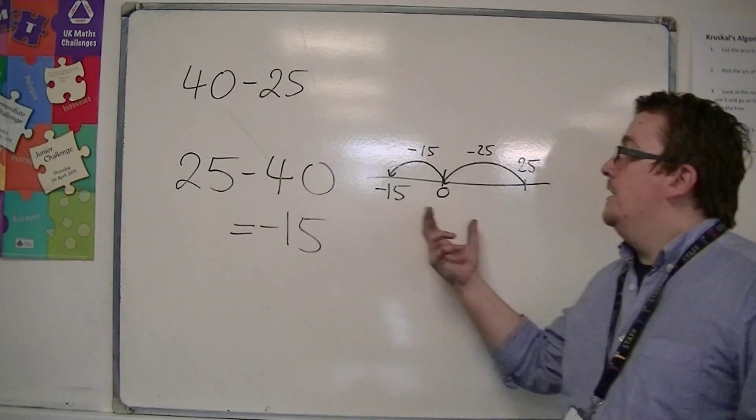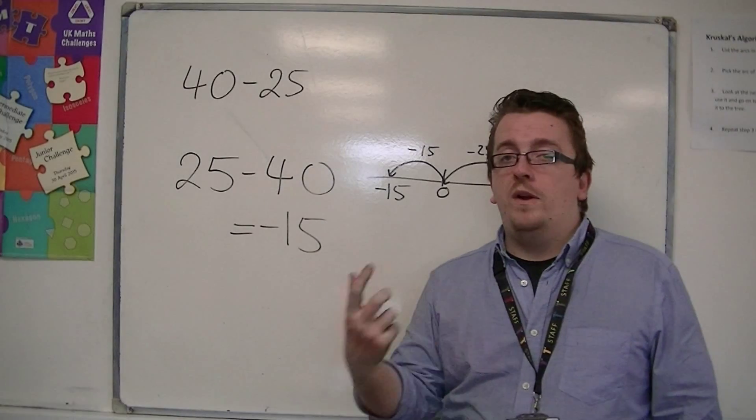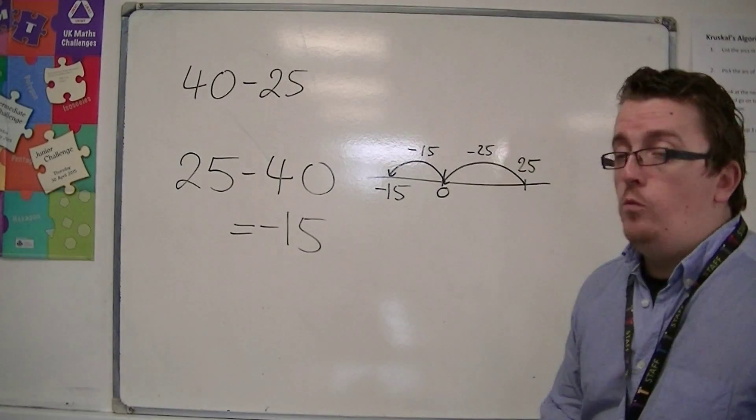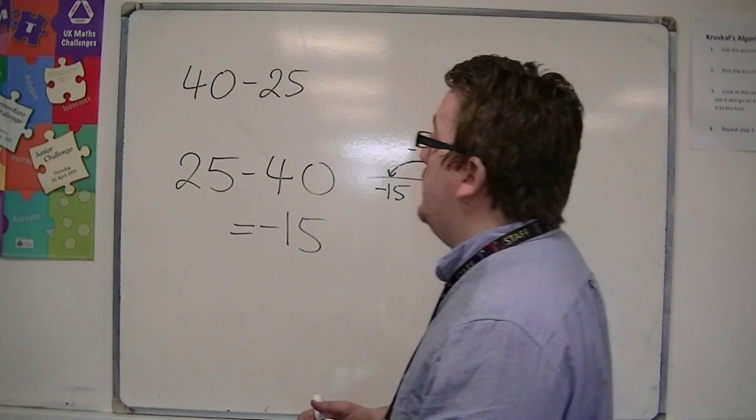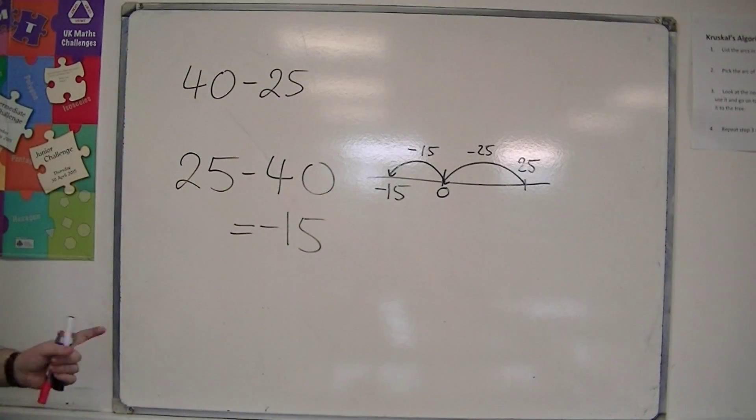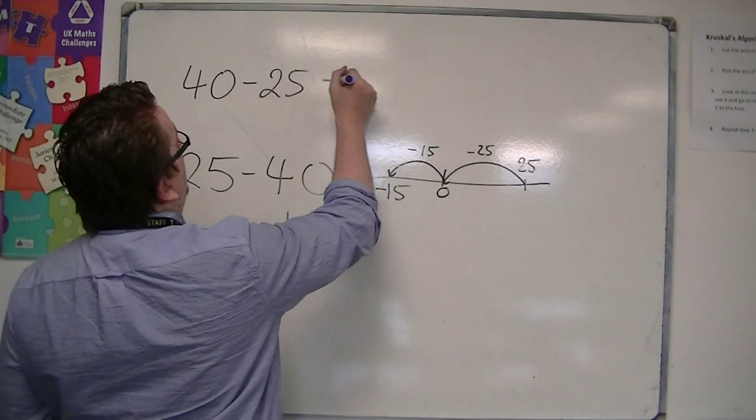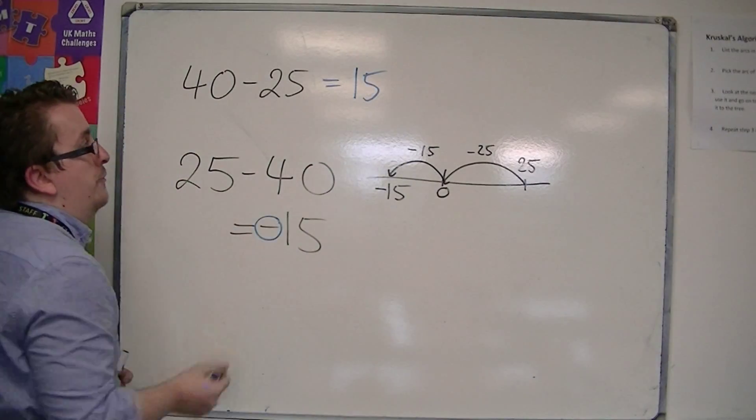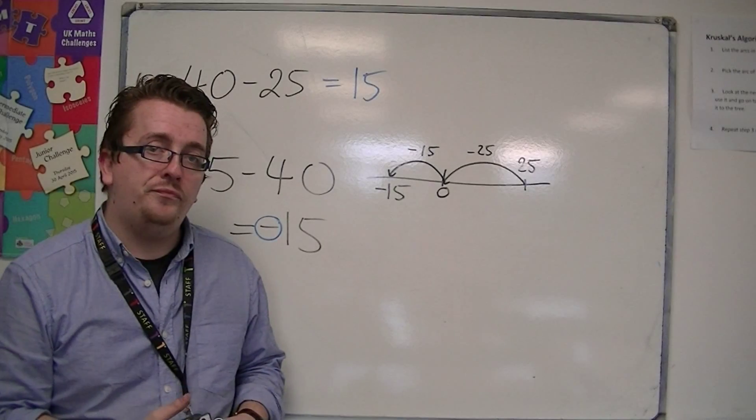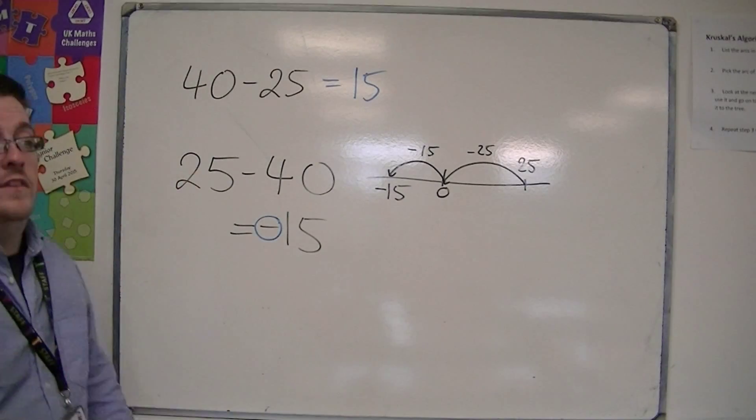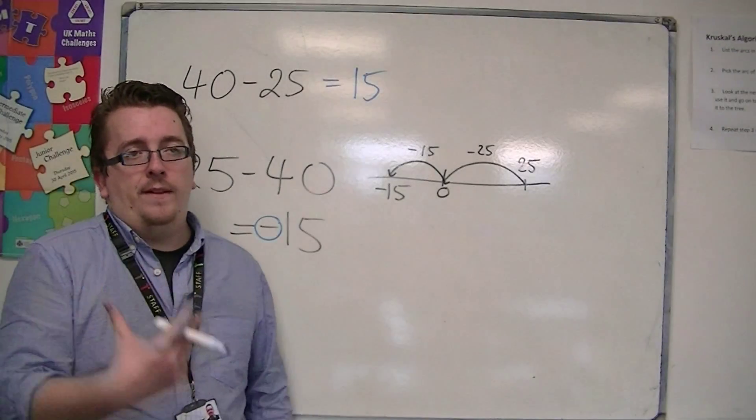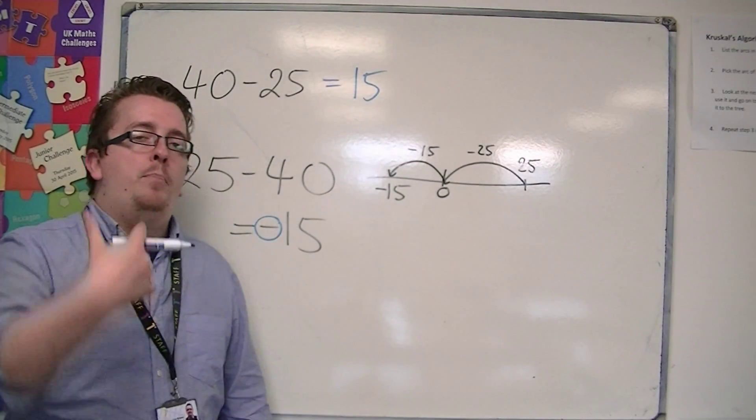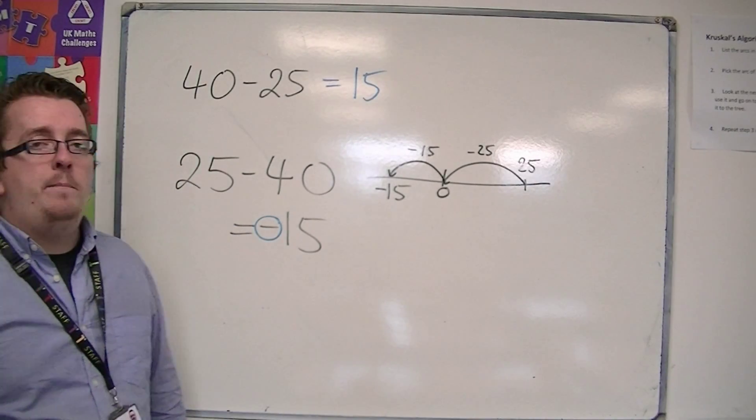But clearly, using a number line like this is quite cumbersome. So really, what you want to be able to do is say to yourself, 25 take away 40 will be the same as doing 40 take away 25 is 15, and then stacking a negative in front of my answer. This is kind of like a really, it feels a bit cheap, but it will speed up your calculations.